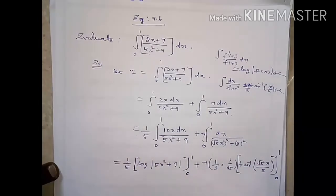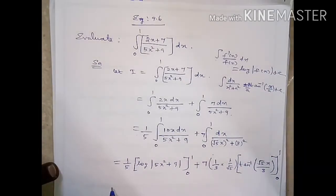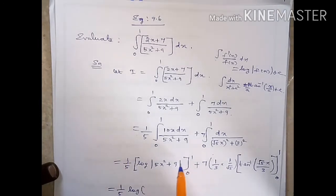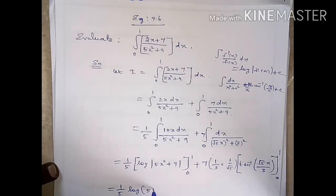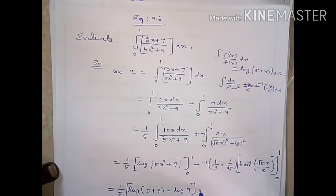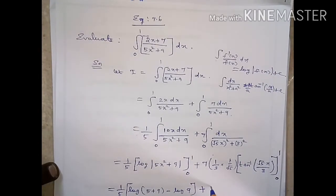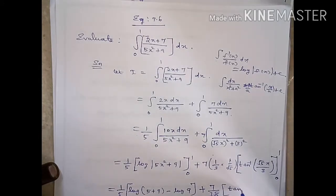Substituting the limits 0 to 1: the first term gives 1 by 5 into log of (5 plus 9) minus log of 9, which is 1 by 5 into log 14 minus log 9. The second term gives 7 by 3 root 5 into tan inverse of root 5 by 3.